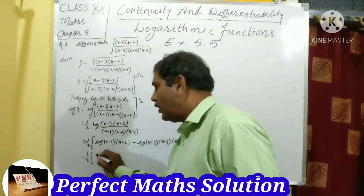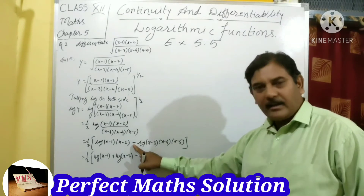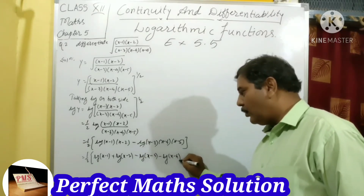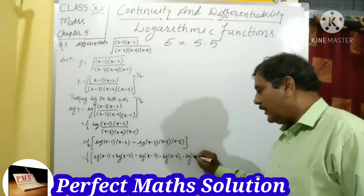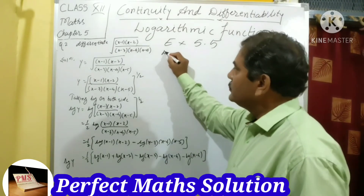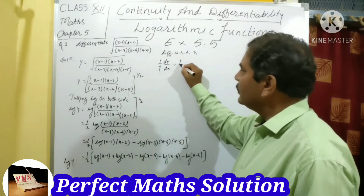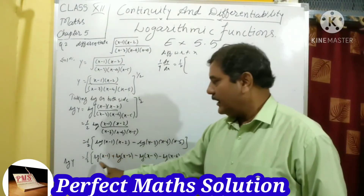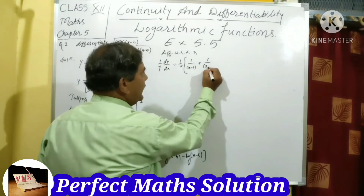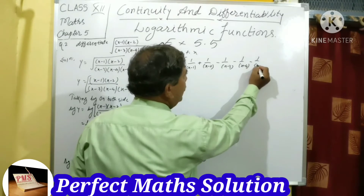Expanding further using the product rule: log y equals (1/2)·[log(x−1) + log(x−2) − log(x−3) − log(x−4) − log(x−5)]. Note the minus sign distributes across all terms in the denominator. Now differentiate with respect to x: 1/y · dy/dx equals (1/2)·[1/(x−1) + 1/(x−2) − 1/(x−3) − 1/(x−4) − 1/(x−5)].